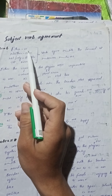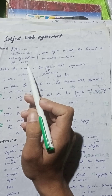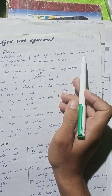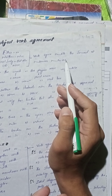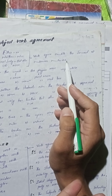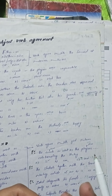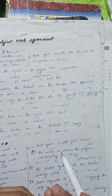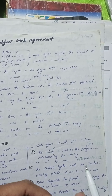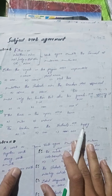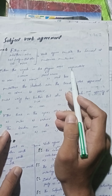Rule number six: اگر either/or، neither/nor، not only/but also، or/nor آ جائے تو verb، second noun یعنی nearest noun کے ساتھ agree کرے گا۔ اگر second noun singular ہے تو verb بھی singular آئے گی، اور اگر second noun plural ہے تو verb بھی plural ہوگی۔ MCQ: 'Either the coach or the player ___ responsible.'